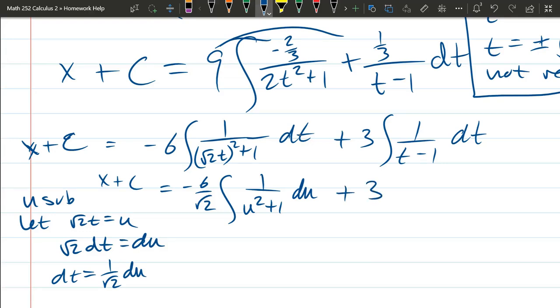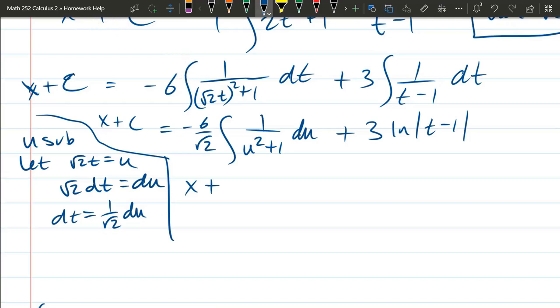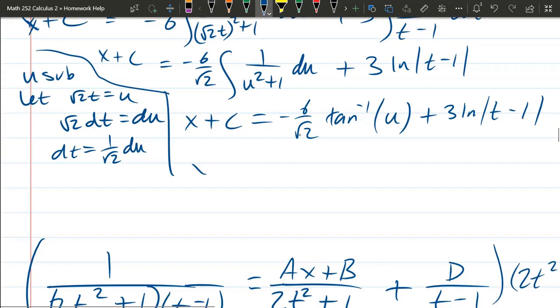x plus c equals negative 6 over root 2. This antiderivative is arctangent. Tangent inverse u, not tangent inverse t, plus 3 ln t - 1. Almost done. x plus c equals negative 6 halves tan inverse of u is square root 2t, plus 3 ln t - 1.